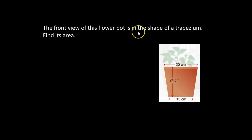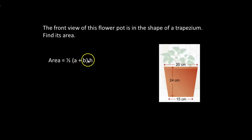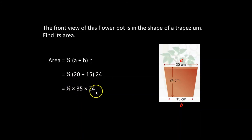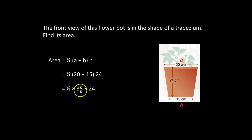The front view of this flower pot is in the shape of a trapezium — find its area. We know the formula is half times (A plus B) times height. Here 15 is given; A and B are the two parallel sides, and the height is 24. Substituting the values gives us half times (20 plus 15) times 24. Let us add this first: that gives us half times 35 times 24.